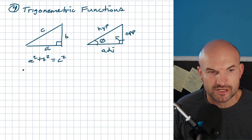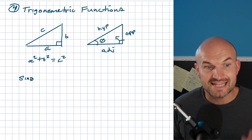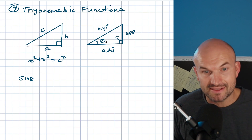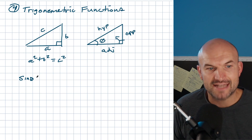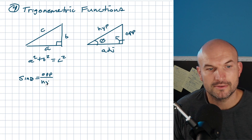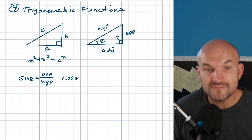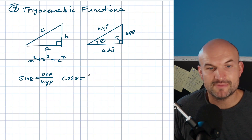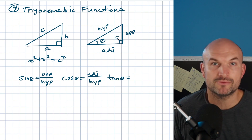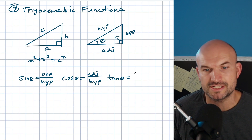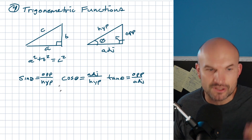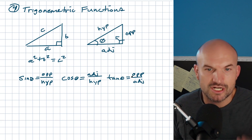Based on this given angle, we can now create our three trigonometric functions — there are actually six, but we'll focus on three. The sine of angle theta is a ratio of the opposite over the hypotenuse. Cosine of theta is equal to the adjacent side over the hypotenuse. And the tangent of theta is the comparison of our opposite over our adjacent. These ratios are always the same: sine is opposite over hypotenuse, cosine is adjacent over hypotenuse, tangent is opposite over adjacent.